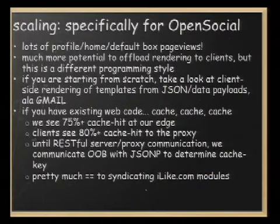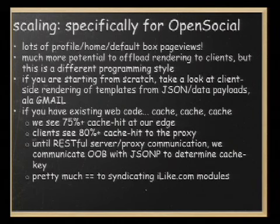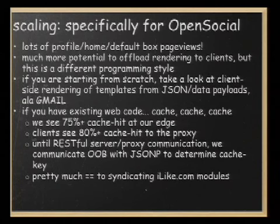Until there are RESTful APIs to allow servers to communicate with the OpenSocial proxy and punch the cache, we implement an out-of-bounds (OOB) JSONP call to our servers to pick up a cache key used to punch the cache. We put enormous cache expiries — like eight to ten days — on these profile boxes so that users have a fast response time.